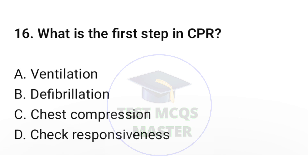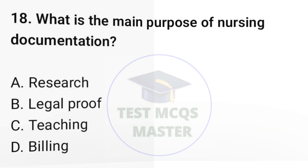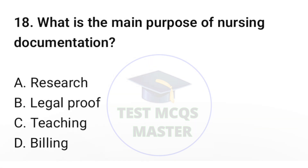Question number sixteen: What is the first step in CPR? The correct option is D: check responsiveness. Question number seventeen: Which symptom is an early sign of hypoxia? The correct option is B: restlessness. Question number eighteen: What is the main purpose of nursing documentation? The correct option is B: legal proof.